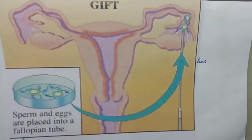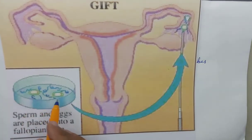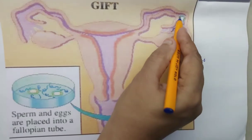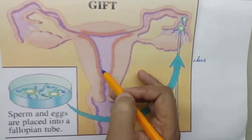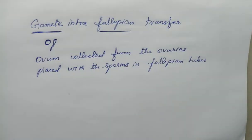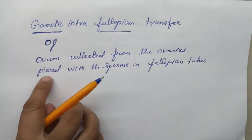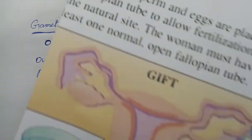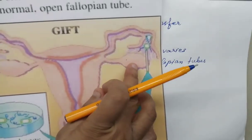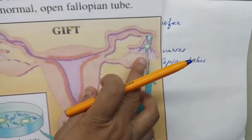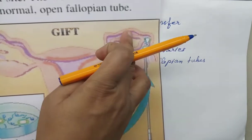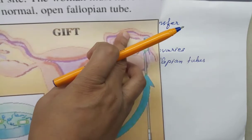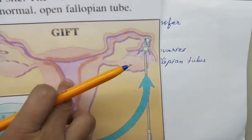Looking at the picture, sperm and eggs are placed directly into the fallopian tube. After fertilization and attending certain division stages — the embryonic stage — the zygote will move towards the uterus where implantation will take place. The eggs are collected from the ovaries, introduced along with sperm into the fallopian tube, where fertilization occurs.